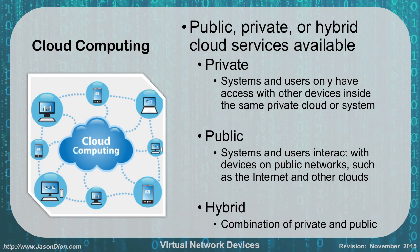A public cloud, on the other hand, is where users and systems interact with other devices on public networks such as the internet or other clouds. Think of something like YouTube — a cloud service we all share our videos on. A hybrid cloud is a combination of a public and a private cloud.